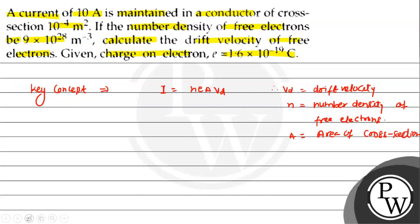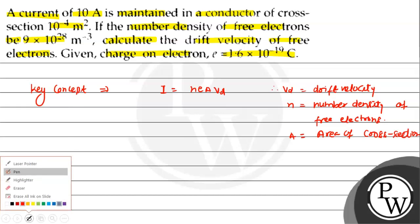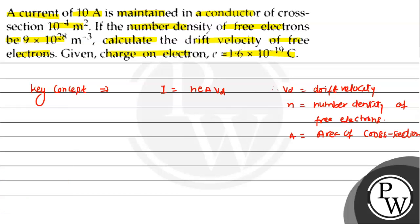Values putt करते हैं यहां पर देखेगा। हमें drift velocity बतानी है। तो यहां से VD क्या जाएगा? VD आपको मिलेगा I upon nAe। Value putt करते हैं — I कितना है? I 10 Ampere है। तो 10 Ampere upon N, number density of free electrons 9 into 10 to the power 28 दिया है।